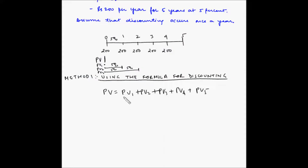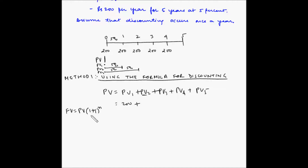PV1 is simply 200. To find PV2, we use the compound interest formula: Future Value equals Present Value into (1 plus i) to the power n. This can be considered a simple case of compound interest.